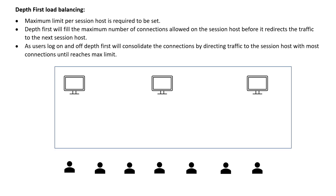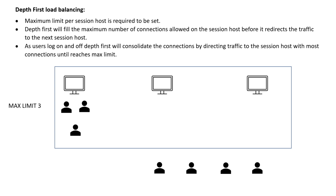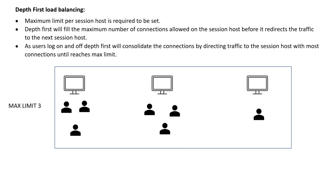Let's say we have three session hosts in a host pool and the maximum limit is three — so only three users can log in to a particular session host. The first user connects to the first session host. The next user also goes to the first session host, because depth-first tries to fill it before moving on. The next user again goes to the first session host. Now the maximum limit is reached, so the next user goes to the second session host, filling it out. The last user moves to the next available session host. That's how depth-first load balancing works.